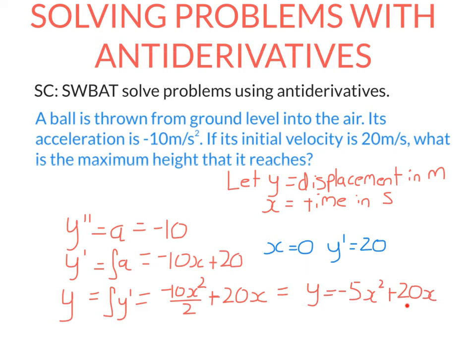So now this is the displacement function. This tells me how high the ball is above the ground, because it was thrown from the ground into the air. To find where this is a maximum, that's really simple. You're just finding the maximum value of this function.